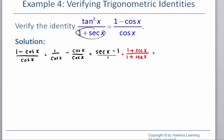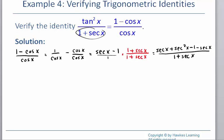Let's look at what we have when we do that. I'm going to multiply across on the top. First times first is secant times 1, which is just secant. The outside terms are secant times secant, so that's secant squared. The inside terms are negative 1 and positive 1, so minus 1. The last terms are negative 1 times secant, so negative secant x. On the bottom I just have 1 plus secant x.